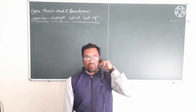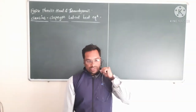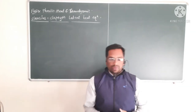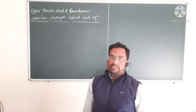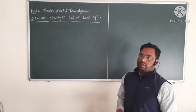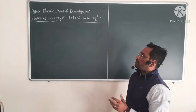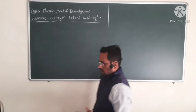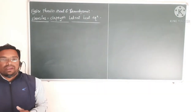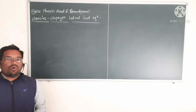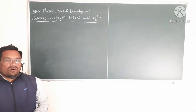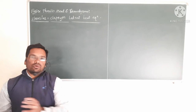Students, now we are going to study the next point of chapter number two, which is Clausius-Clapeyron latent heat equations. These equations are important for finding out the effect on melting point and boiling point of a substance with respect to pressure.